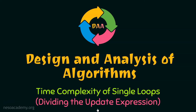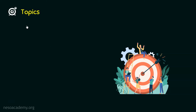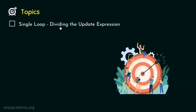Let's get started and see the topics of this lecture. The first topic is single loop dividing the update expression — we will learn through an example how to find the time complexity of a single loop where in the update expression we divide the variable by a constant. Then after this, I will give the homework of this lecture, and your job is to solve the problems given in the homework.